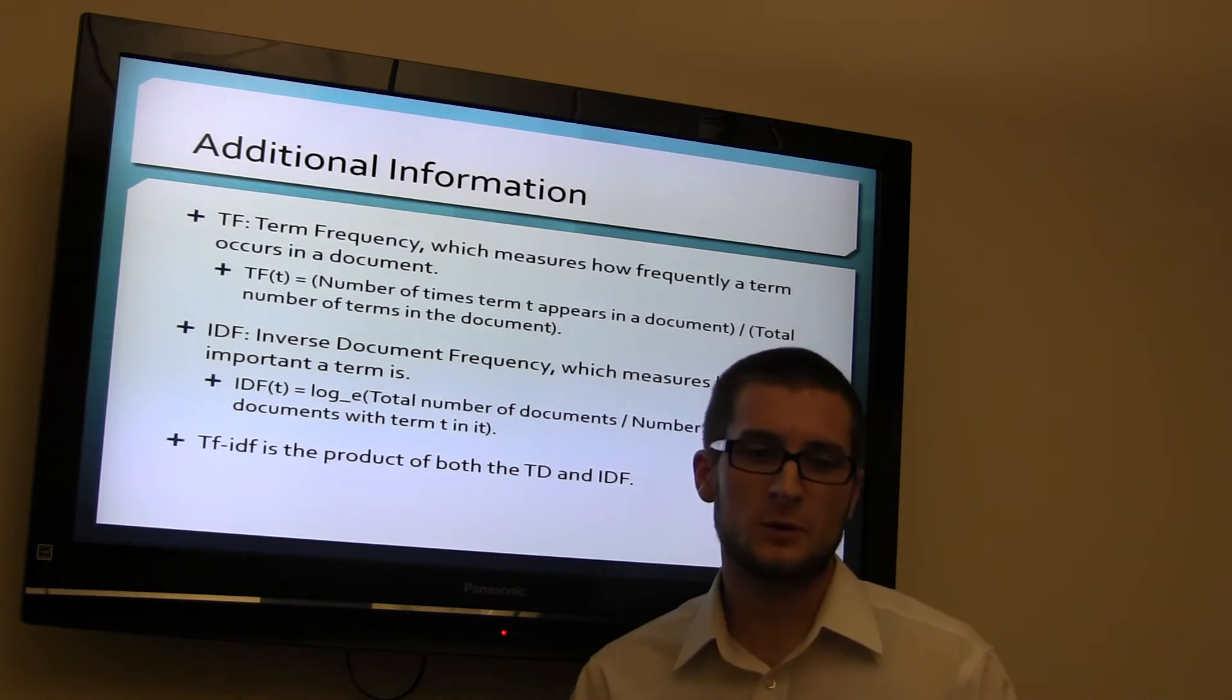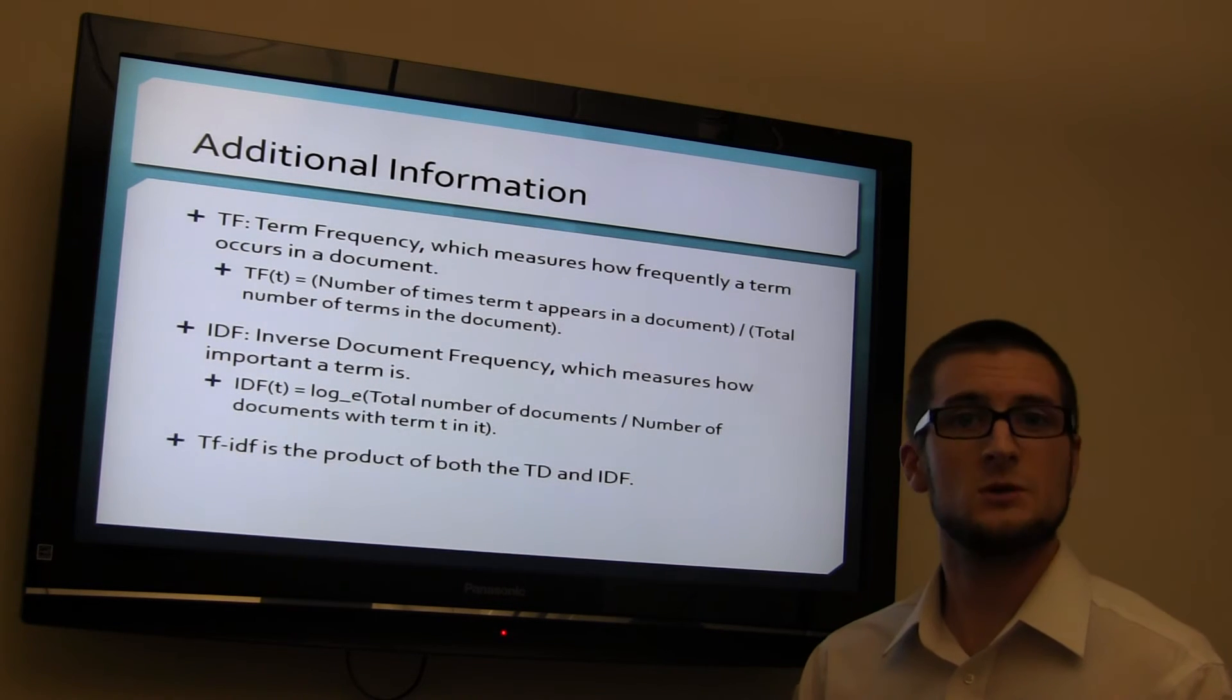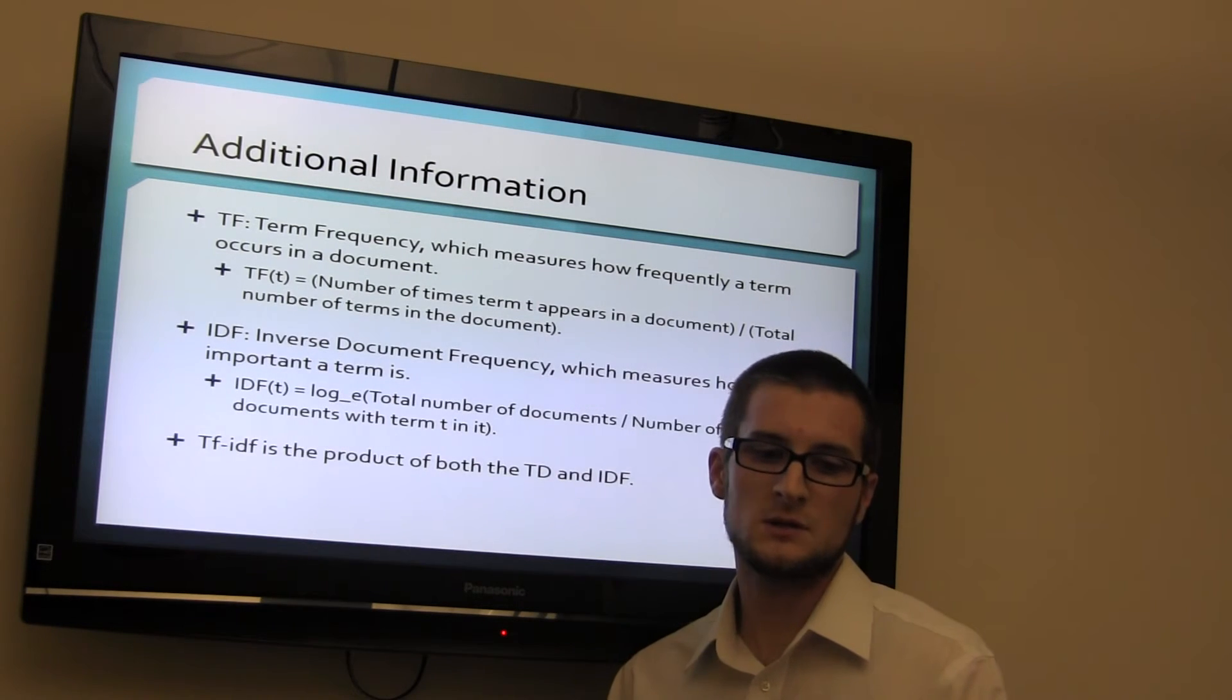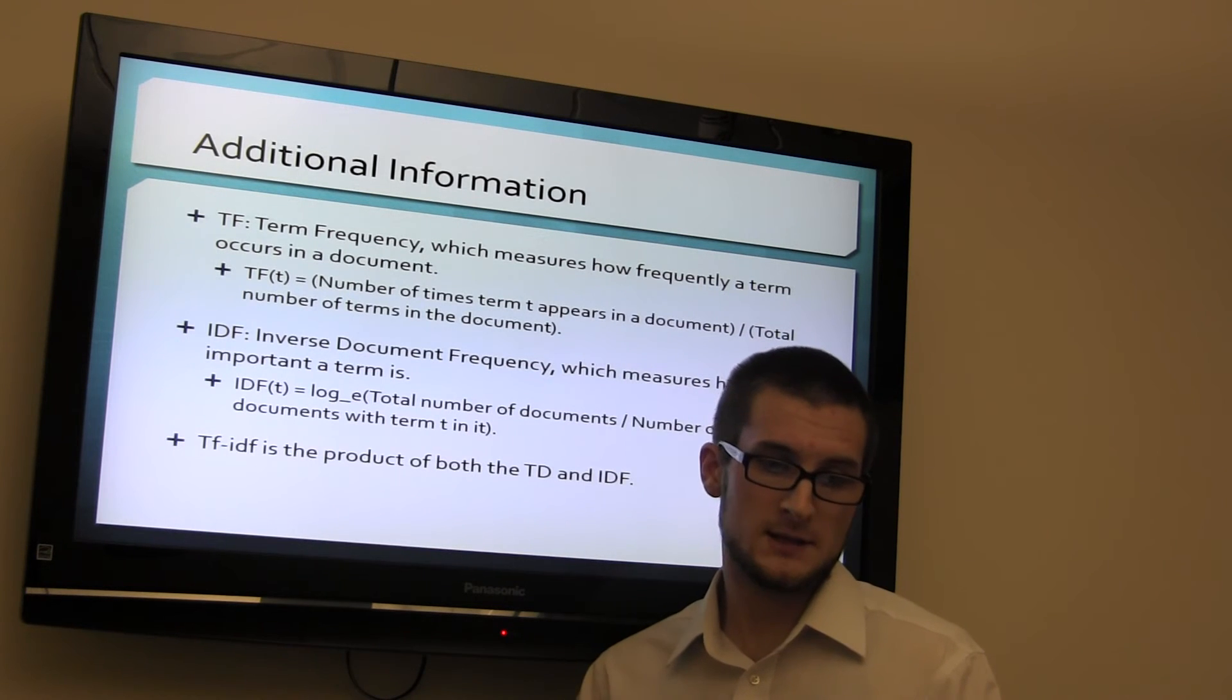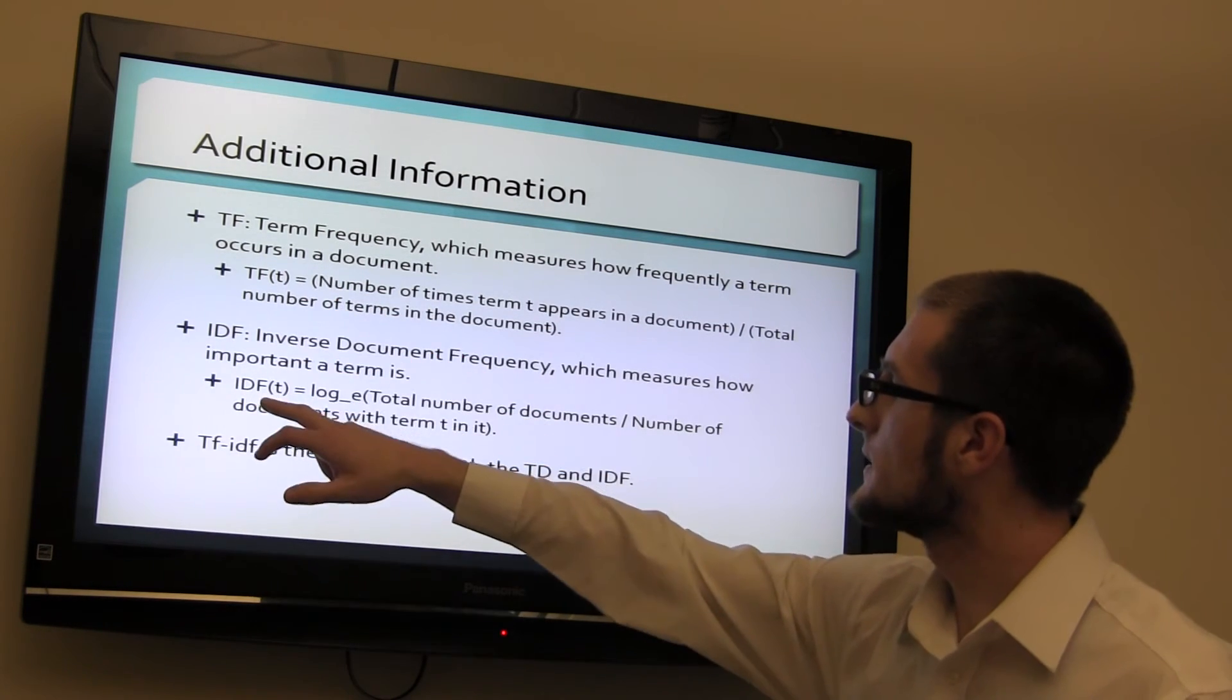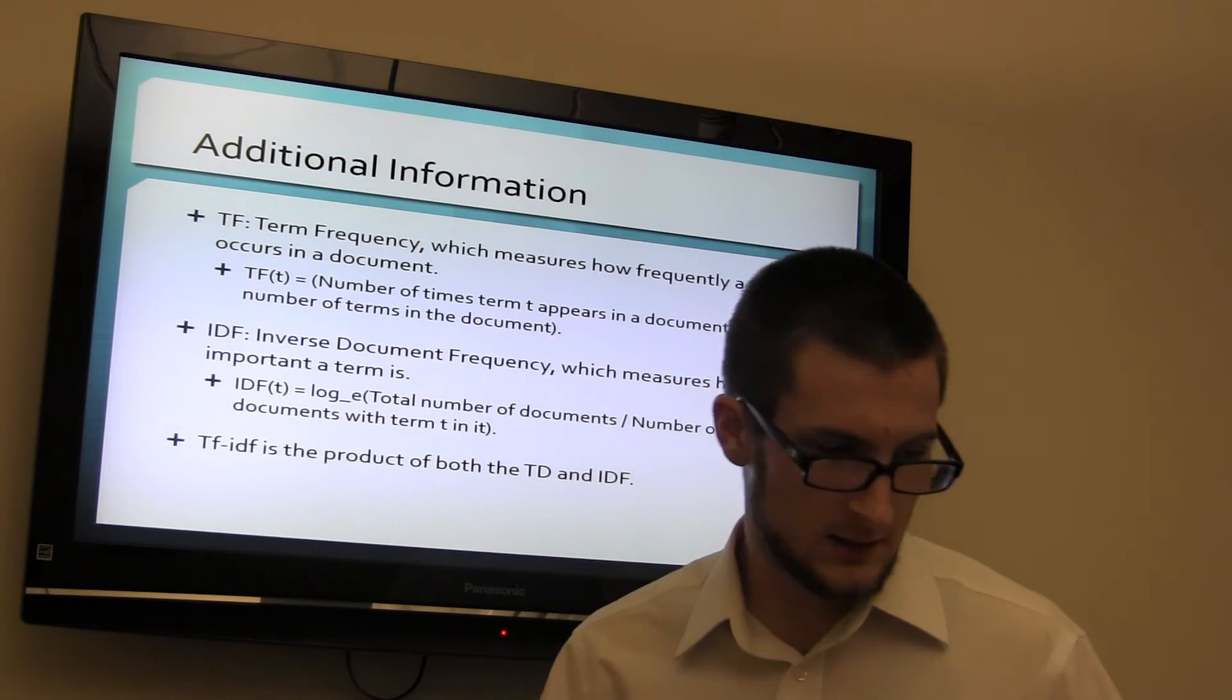The IDF is the inverse document frequency, which measures how important the term is opposed to others. IDF T log E is log E of total number of documents over the number of documents with the term T in it. TF-IDF is the product of both TF and IDF. So once you find the answer for this and this, you're able to find TF-IDF, which is used in the dot product.